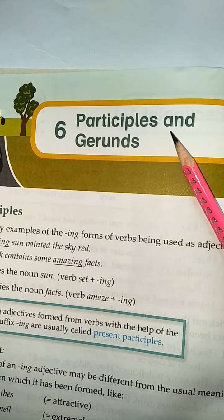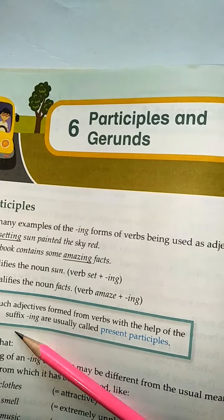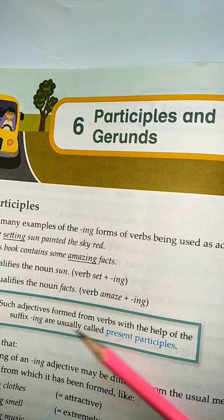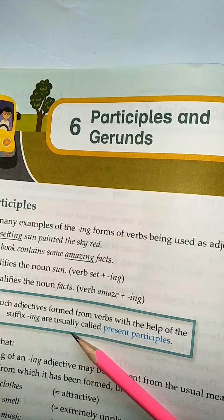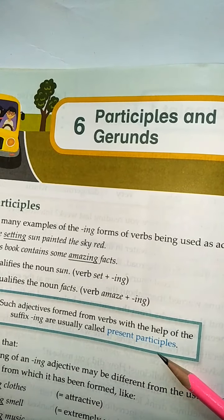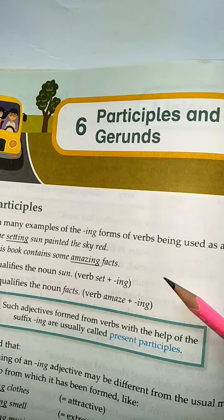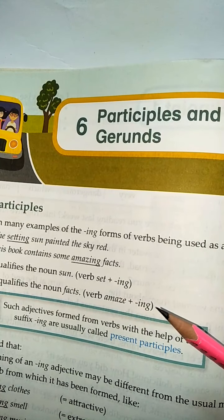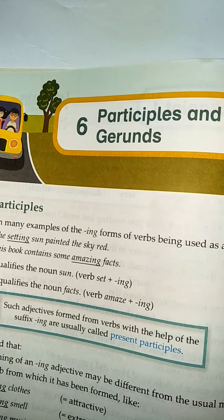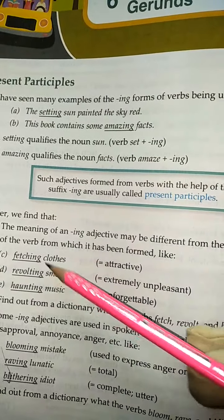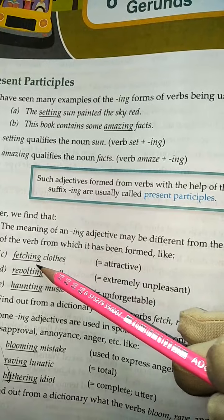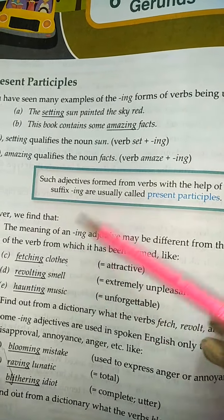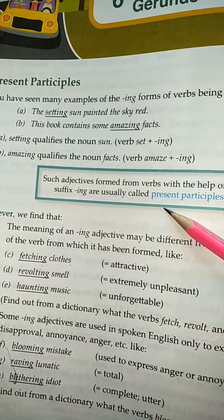Do you know the meaning of participles? Some adjectives formed from a verb with the help of the suffix -ing are usually called present participles. Participle ka matlab aur gerunds ka matlab — jis mein hum verb ki first form ke saath -ing lagate hain. This is also called continuous tense. For example, 'fetching' — fetch is the first form, add -ing, so this is called the present participle.